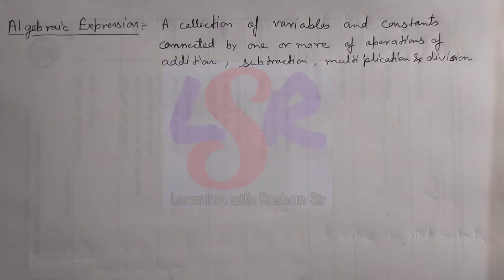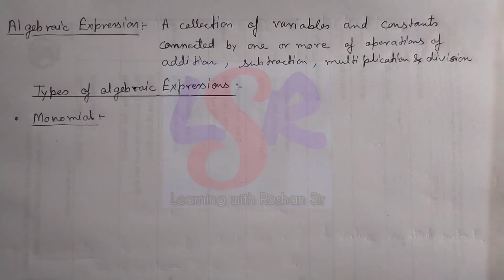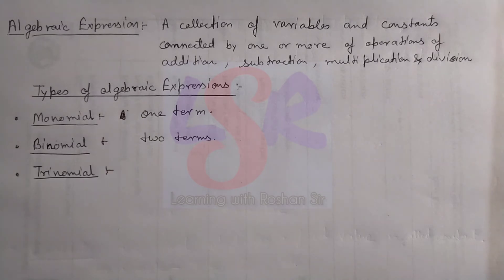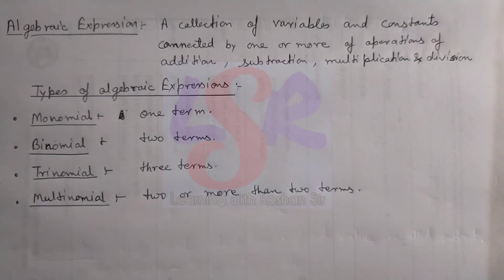Now we have various types of algebraic expressions. The very first one is monomial, consisting of one term. In binomial we have two terms. In trinomial, three terms. And we use multinomial for two or more than two terms.